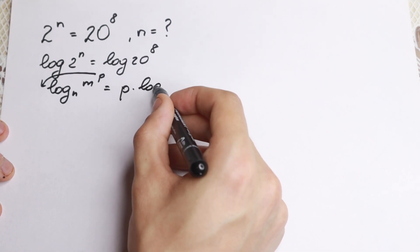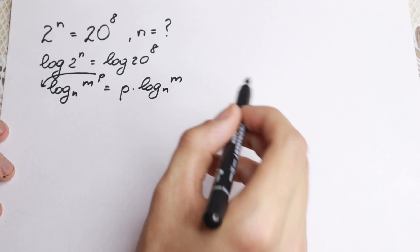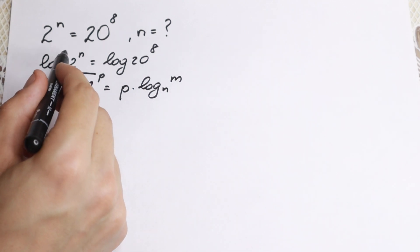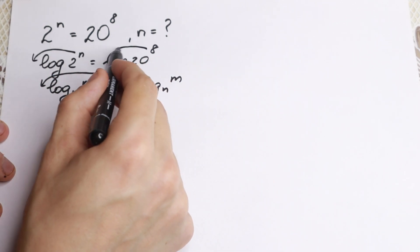Right here, p times log m base of n, so this is why I take log, because this n goes right here and this 8 goes right here.